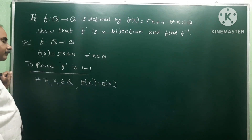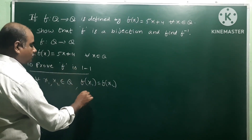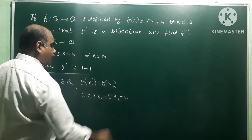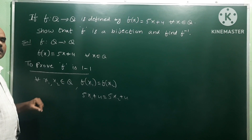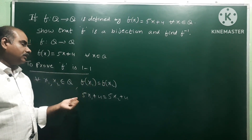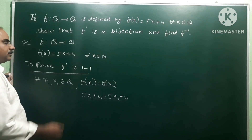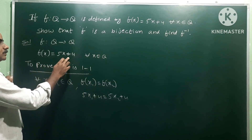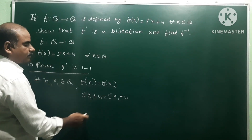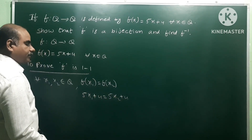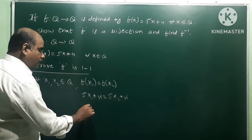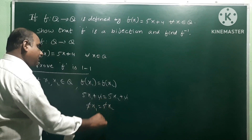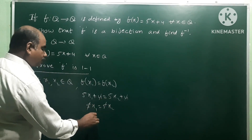f(x1) = 5x1 + 4 and f(x2) = 5x2 + 4. Setting f(x1) = f(x2): 5x1 + 4 = 5x2 + 4. Cancel 4 from both sides to get 5x1 = 5x2. Cancel 5 from both sides.